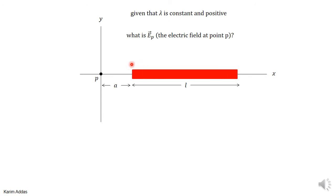We want to find the electric field at point P, the origin. Point P is located a distance a away from the edge of the rod.